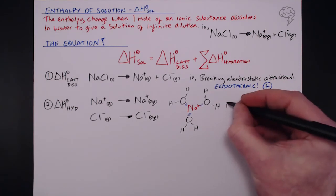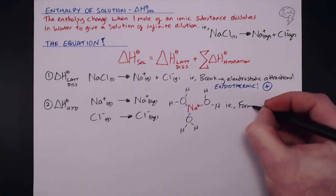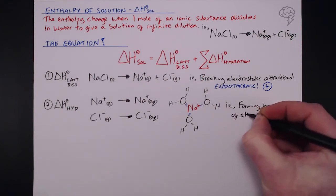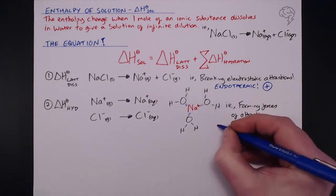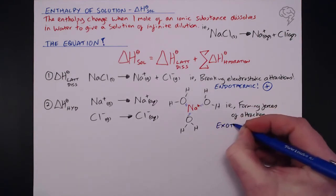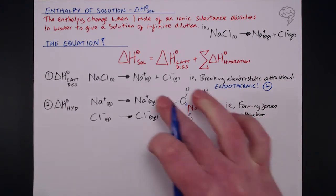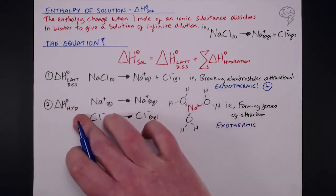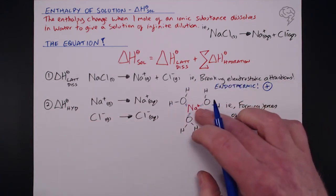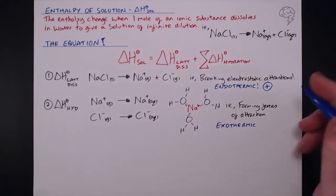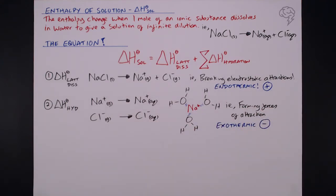So in other words here, for our delta H hydration, we are forming forces of attraction. So what we can say is that again, every day of the week, when this happens, this is an exothermic process. So every single value you get for delta H hydration, when these water molecules associate around the positive, and of course negative ions, it's going to be an exothermic process, therefore a negative delta H.